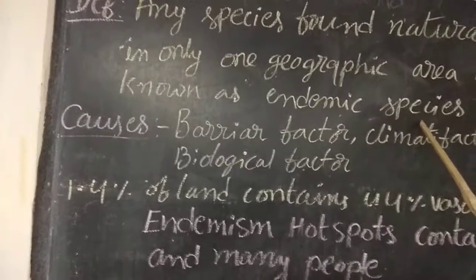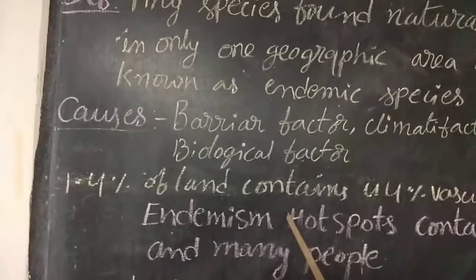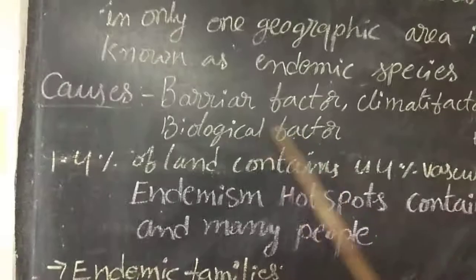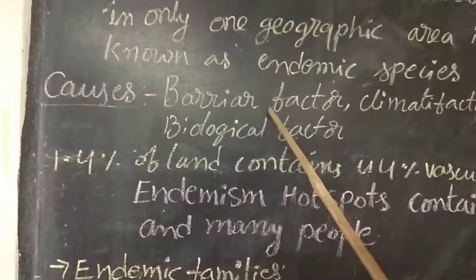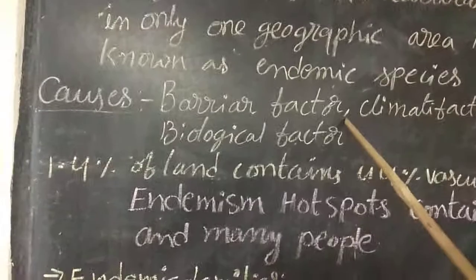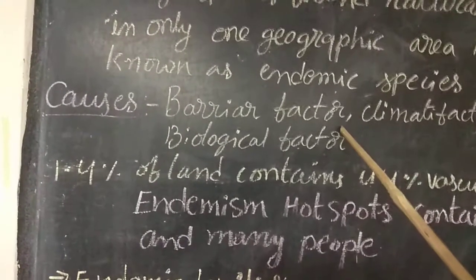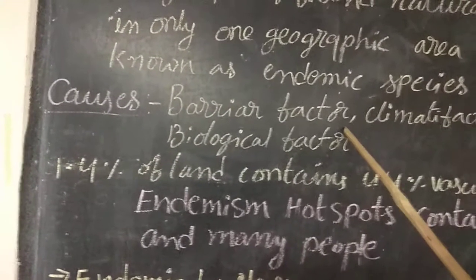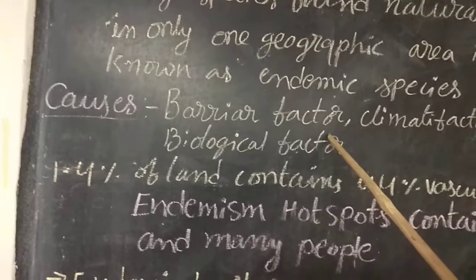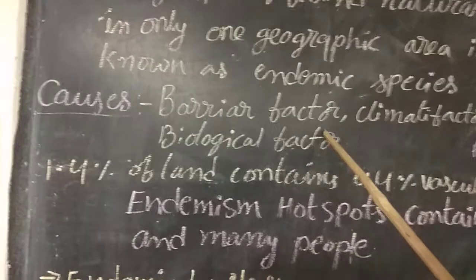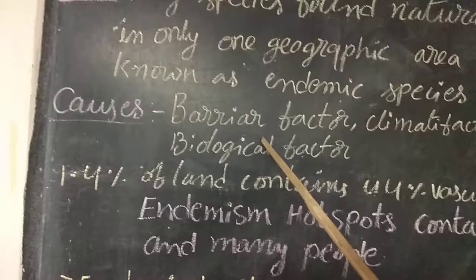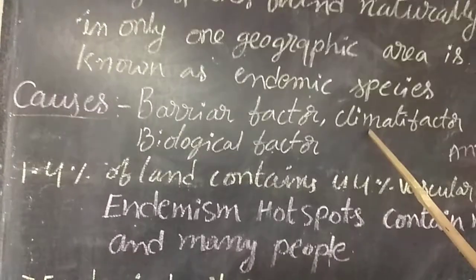The causes for endemism are: barrier factor, climatic factors, and biological factors. The barrier factor means any geographical area may be divided by tall mountains or huge water bodies. The plants growing in that area are not exposed to cross-pollination, which facilitates species origin. This is the barrier factor.